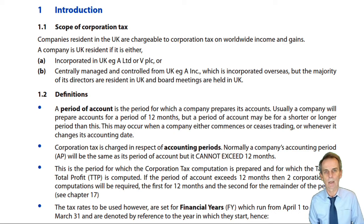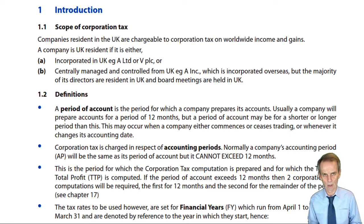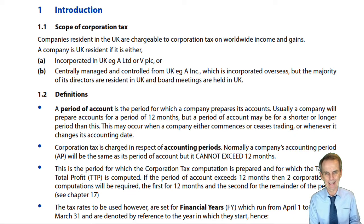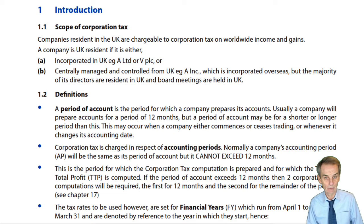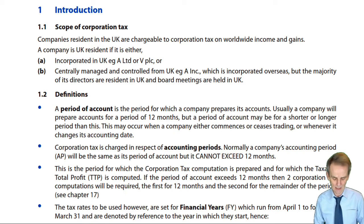This is another simplification compared to personal tax. Individuals were charged to income tax on their income and to capital gains tax on their chargeable gains, each in separate computations. Here, we don't have separate charges for income and gains of companies - a company prepares one corporate tax computation including its worldwide income and gains, with one figure of corporation tax charged on the entirety. UK residency is a definition that could be tested in objective questions.